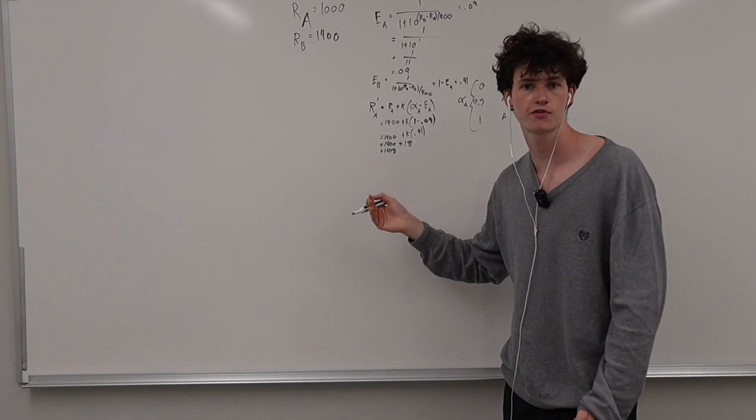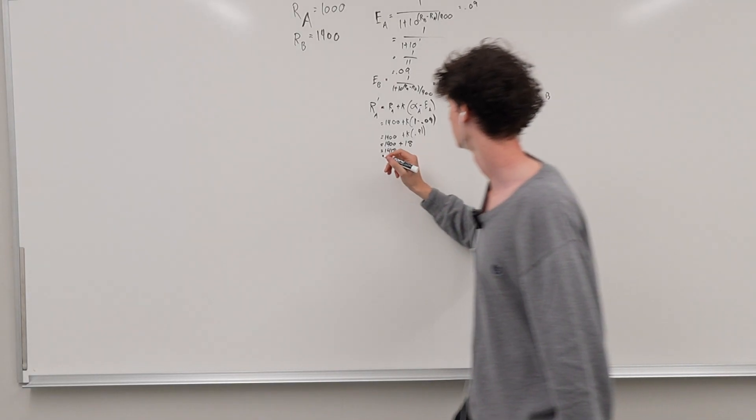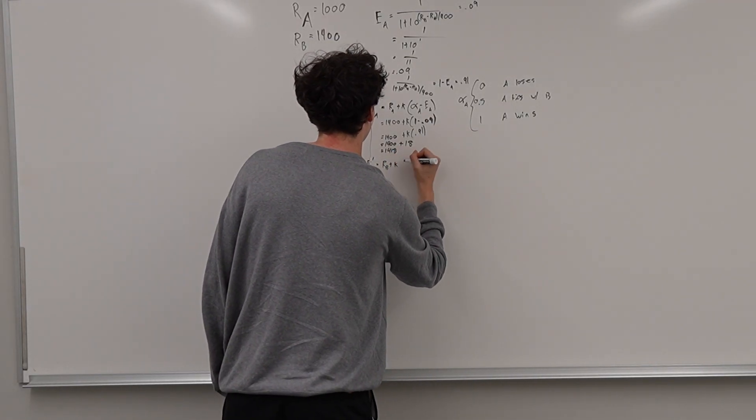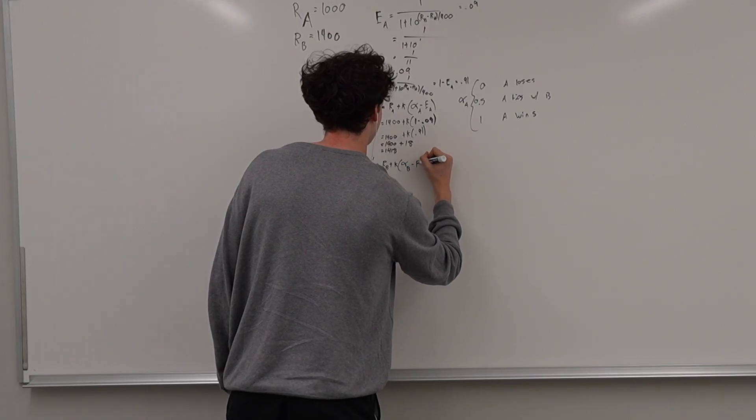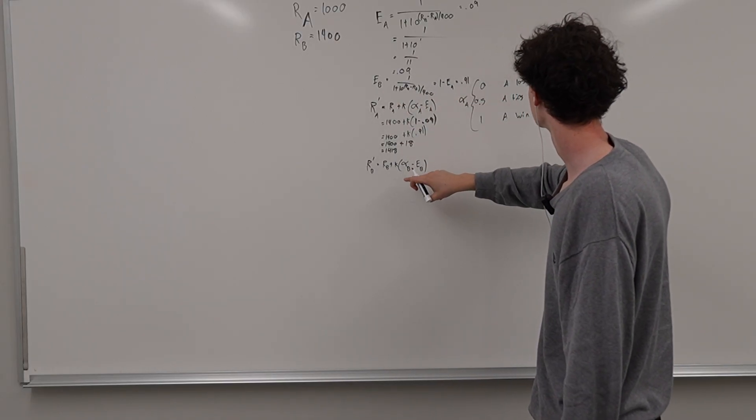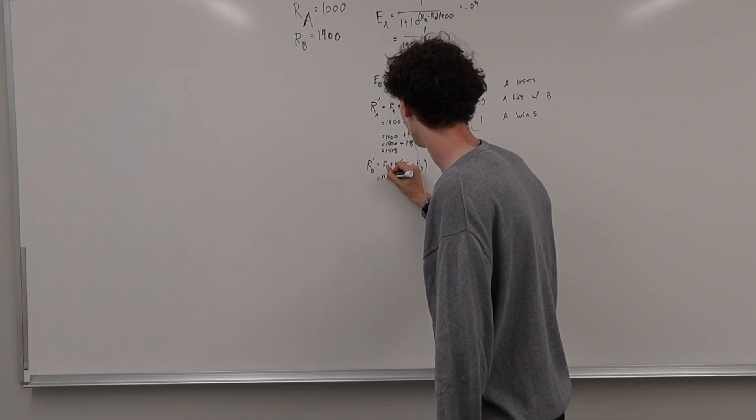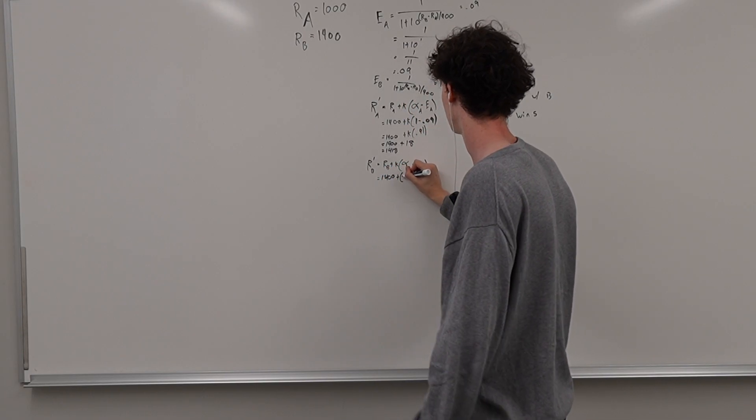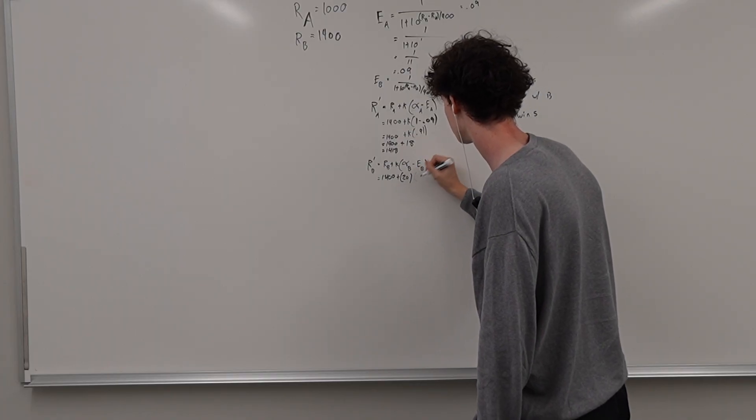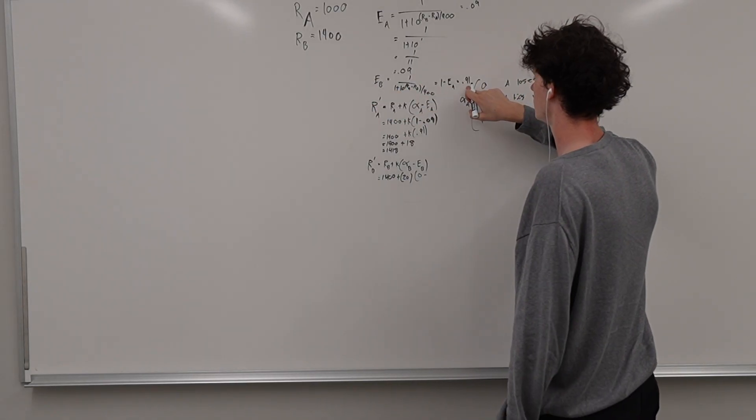And then it's the same for person B's rating. We just apply the same formula, keep alpha the same and we can actually do it. So RB prime equals RB plus K alpha B minus EB. So EB is 0.91 and alpha B is 0 because B lost this match. So this person's new rating is going to be 1400 plus, and then we chose a K of 20. So it's going to be 20 times alpha B. Alpha B is 0.